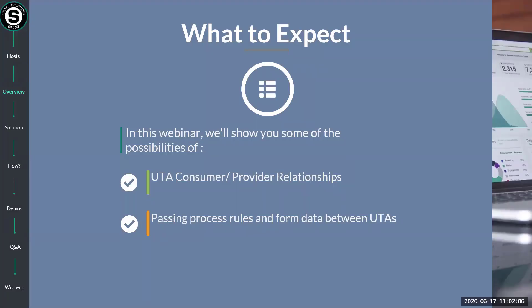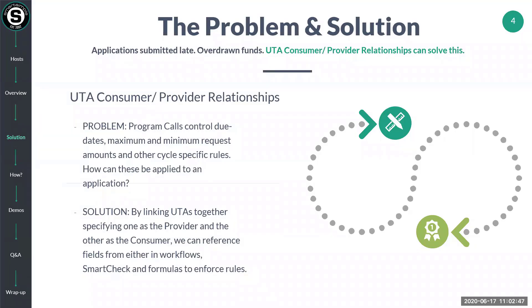So what do I mean by consumer provider relationships and what kind of benefits do they bring? Within SmartSimple, you can have many different universal tracking applications, or UTAs. Typical examples of these are your program manager, your budget manager, your application manager, your meeting manager, etc. We use what we call the consumer provider relationship to communicate between those applications — for passing rules and data between those different UTAs and including them in validations and calculations. In each relationship, one UTA will act as the provider providing the rules, and the other will act as the consumer consuming the rules.